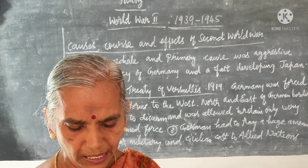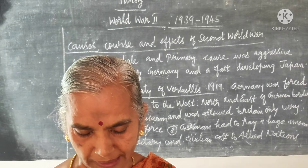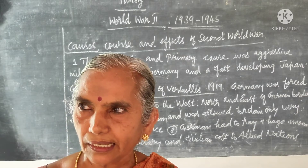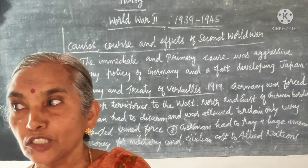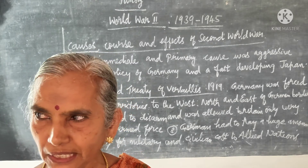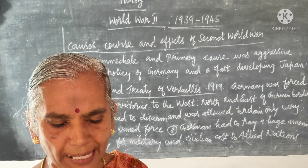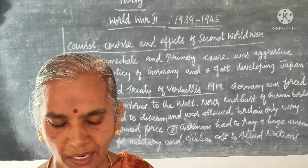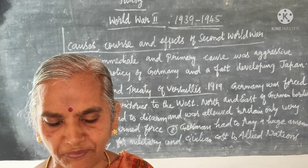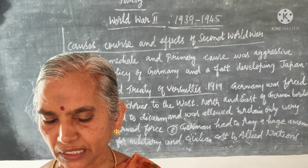Japan then turned its attention towards America and attacked Pearl Harbor in December 1941. Japan attacked American naval installations in Pearl Harbor, Hawaii, without warning. The idea was to cripple the American Pacific fleet so that Japan would not face any opposition in its offensive against Southeast Asian countries. Many battleships and numerous fighter planes were destroyed.